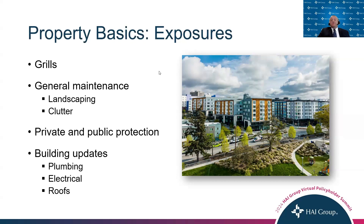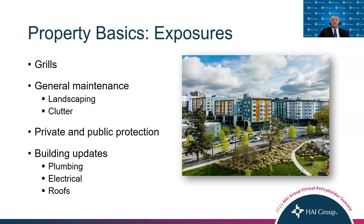One example is roofs. If a roof is older and close to its expiration date, it might have leaks, causing water damage to the apartments just below. Another big one is the electrical system — an old electrical system is prone to short circuits or even fires. There are fires generated because of old electrical systems that have not been updated. So it's important to always make sure that your building systems are up to date.